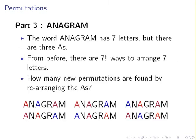So, that is part two. Now, what we're going to do is look at part three. Now, there are seven letters in the word ANAGRAM, but there are three A's. So, this is very similar to the last problem. From before, we have seven factorial ways to arrange seven letters.